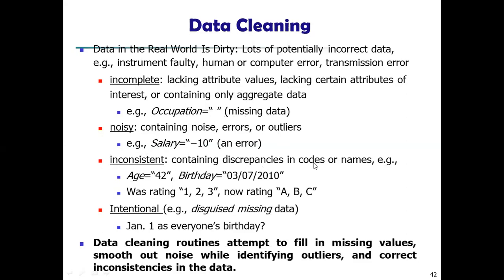Inconsistency means discrepancies in codes or names. For example, age is 42 but birthday doesn't match. Or ratings in one database are 1, 2, 3 but now ratings are A, B, C — these types of inconsistencies occur. They may also be intentional — many people intentionally fill in wrong information, for example everyone listing January 1st as their birthday, or in India using June 1st as a common default birthday.